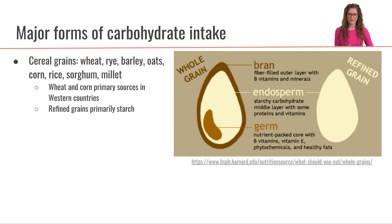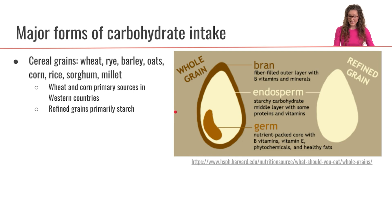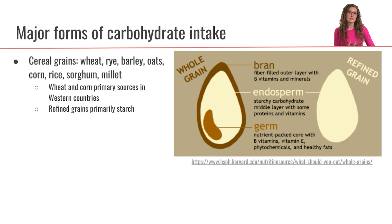Those are the three main components of whole grains. When we take those whole grains and refine them, we take off the bran and get rid of the germ, so we're really just left with that starchy endosperm. We're throwing away a whole bunch of the very nutrient-dense components of whole grains when we eat them as refined grains.